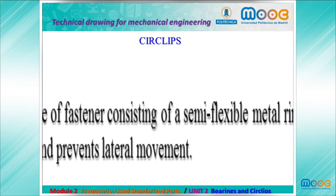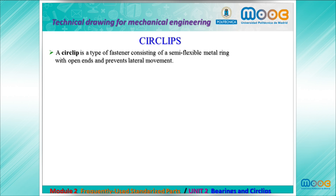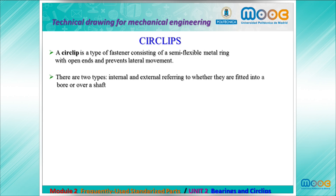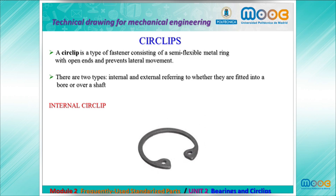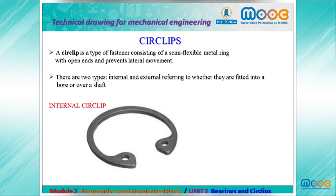Circlips. A circlip is a type of fastener consisting of a semi-flexible metal ring with open ends, and it prevents lateral movement. There are two types — internal and external — referring to whether they are fitted into a bore or over a shaft. Here we have the image of an internal circlip and an image of an external circlip.